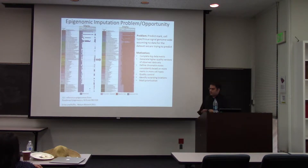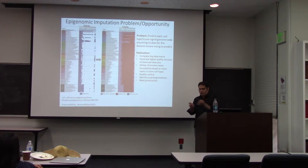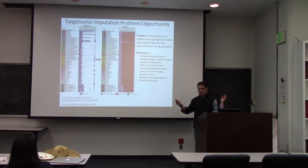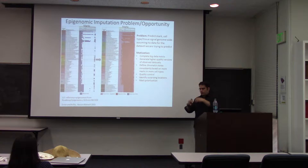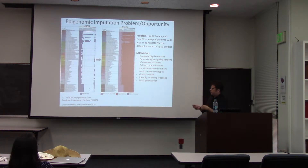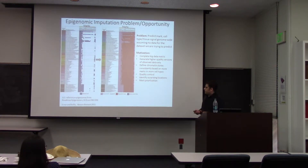Even if we have observed data available, the imputed data can be useful as a quality control measure — we can see if the observed data agrees with the imputed data. If it doesn't, that's a data set to be concerned about. It can also work as a pseudo-replicate. Furthermore, if a data set overall agrees with imputed data but has specific surprising locations, those could be biologically interesting because the imputed data gives a prior based on all available knowledge of what an experiment should look like.